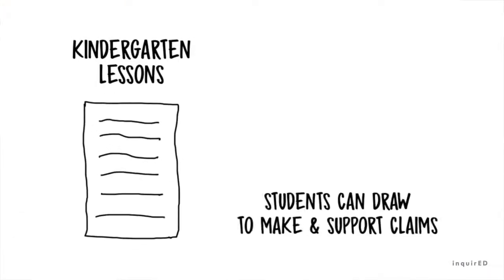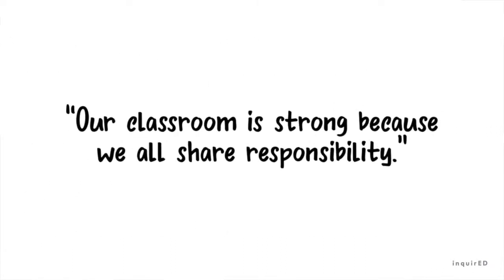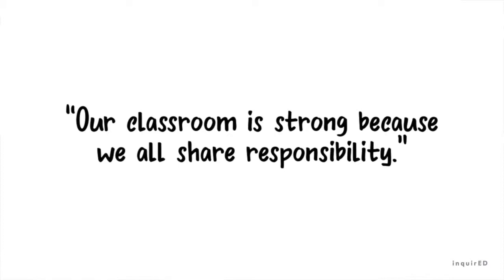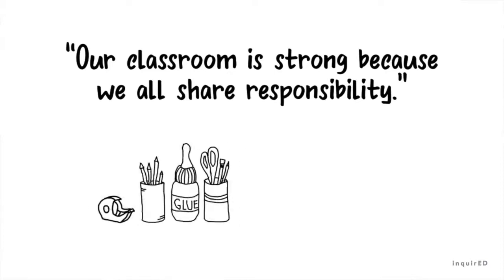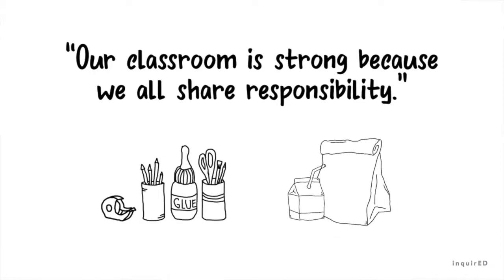It's important for students as young as kindergarten to start recognizing claims and distinguishing fact from opinion. How can you do this without writing? In kindergarten lessons, students can draw pictures to make and support claims. For example, the claim 'our classroom is strong because we all share responsibility' could be supported by drawings of someone organizing supplies and another person helping with cleanup after lunch.